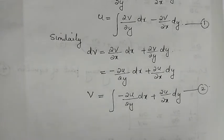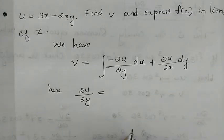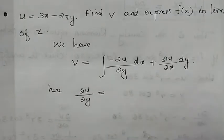Problem: u = 3x − 2xy. Find v and express f(z) in terms of z. The real part is given as u = 3x − 2xy. We will first calculate v using the method, then find f(z) in terms of z.